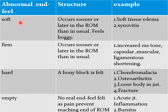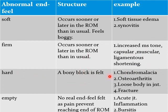Abnormal end feel is of four types: soft, firm, hard, and empty. Abnormal soft end feel occurs sooner or later in the range of motion than usual, feels boggy — for example, soft tissue edema or synovitis. Abnormal firm end feel also occurs sooner or later than usual — for example, increased muscle tone or capsular, muscular, or ligament shortening. Abnormal hard end feel involves a bony block — for example, chondromalacia, osteoarthritis, loose body in the joint, or fracture. Empty end feel means no real end feel is perceived, as pain prevents reaching end range of motion — for example, acute joint inflammation or bursitis.